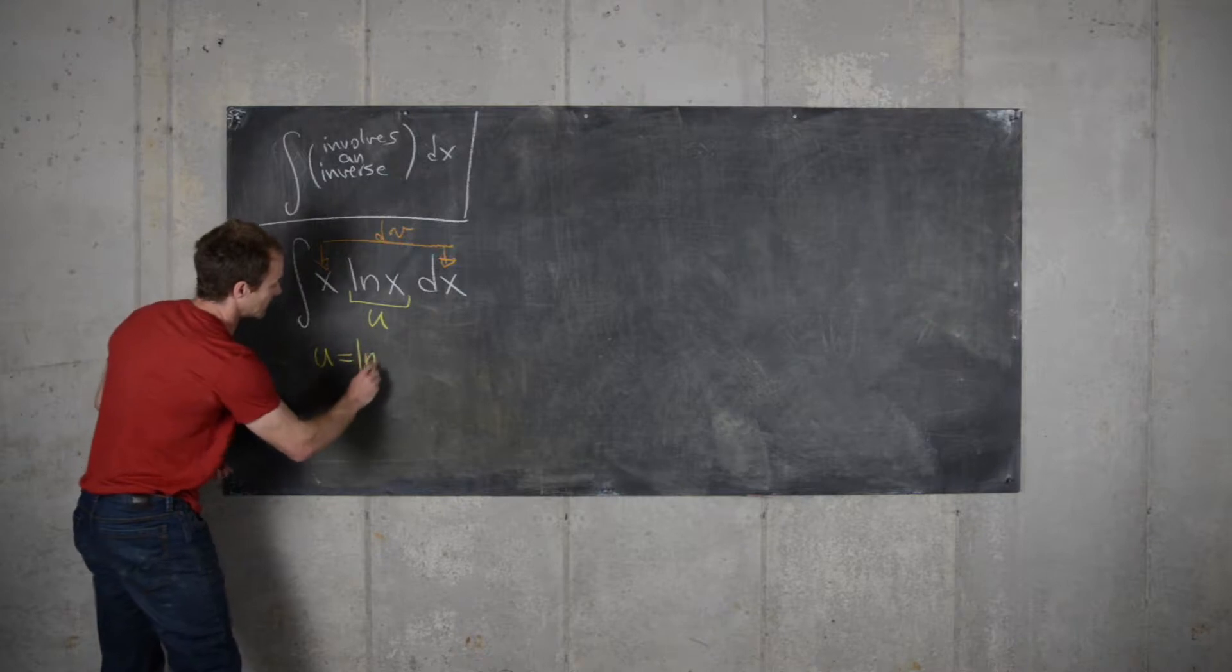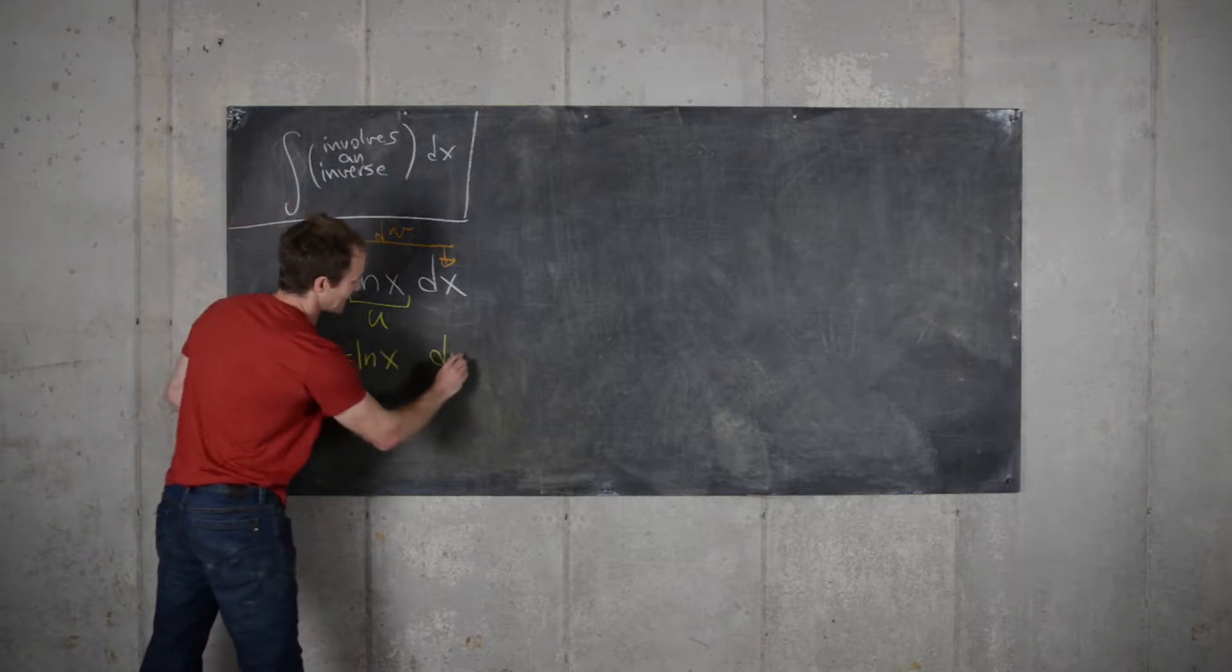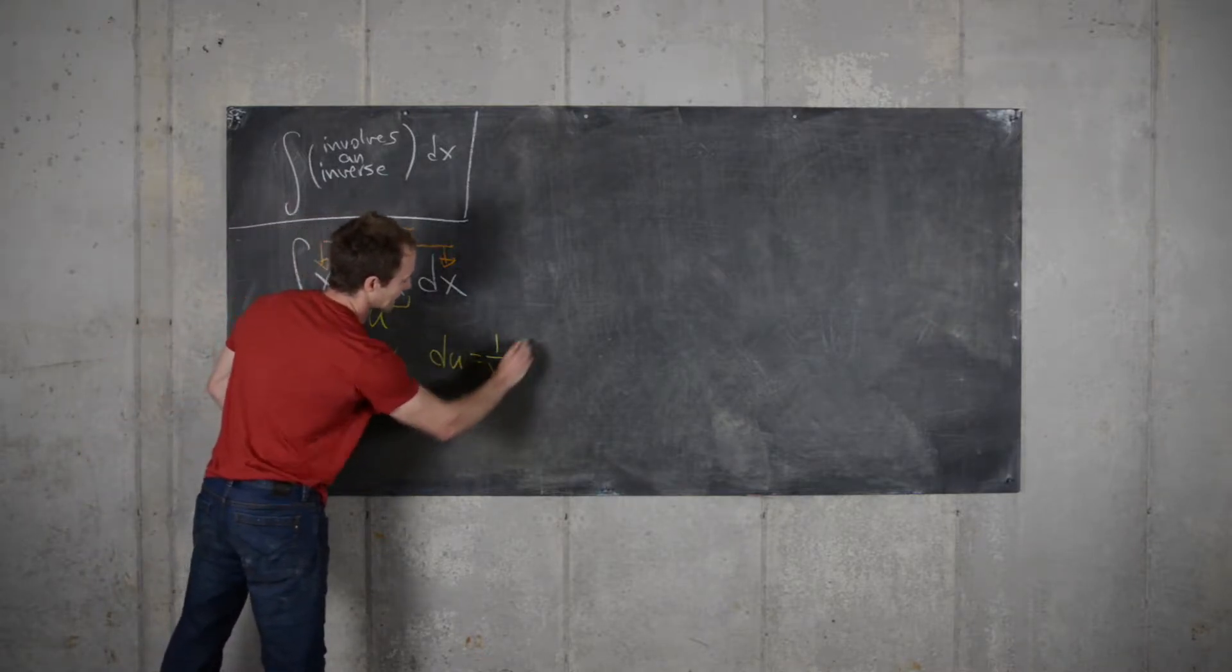So we have u equal the natural log of x. That makes du equal 1 over x dx.